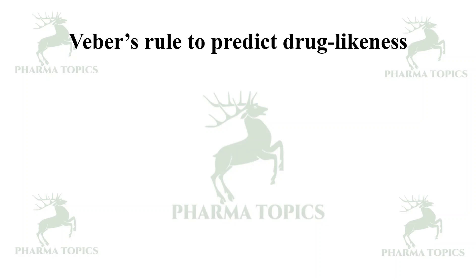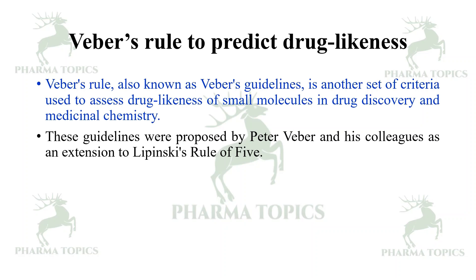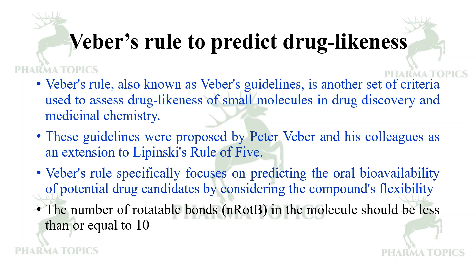Another rule used to predict drug likeness is Weber's Rule, also known as Weber's guidelines. It was proposed by Peter Weber and colleagues as an extension of Lipinski's Rule of Five. Weber's Rule specifically focuses on predicting oral bioavailability by considering molecular flexibility — the number of rotatable bonds should be less than or equal to 10.